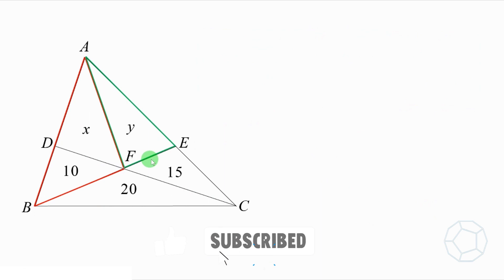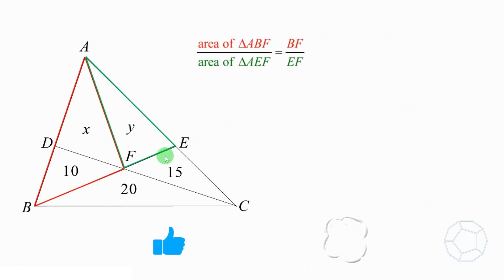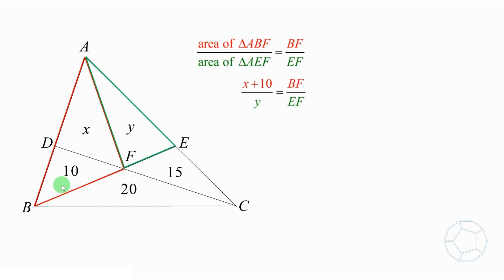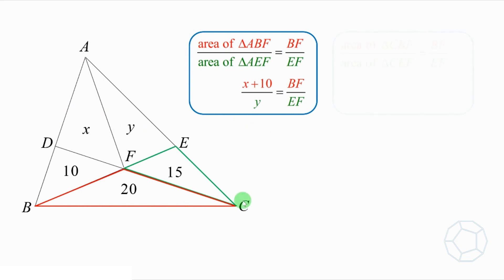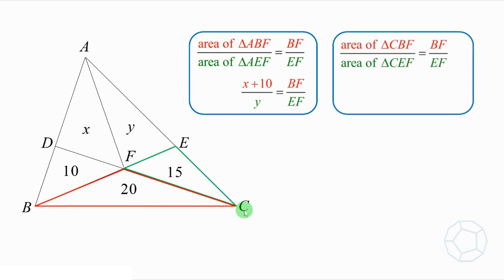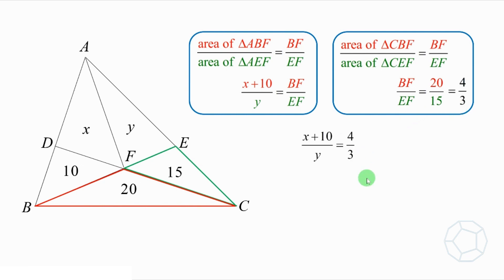Let's focus on another pair of bases — this time BF and EF. The ratio of the bases is equal to the ratio of the red triangle ABF and the green triangle AEF. Therefore, BF over EF is equal to (X plus 10) over Y. We can also check out another pair of triangles: triangle CBF and triangle CEF. Therefore, BF over EF is also equal to 20 over 15, which is equal to 4 over 3. Putting the two equations together and cross-multiplying, we have 3 times (X plus 10) is equal to 4Y. Let's call this equation 2.